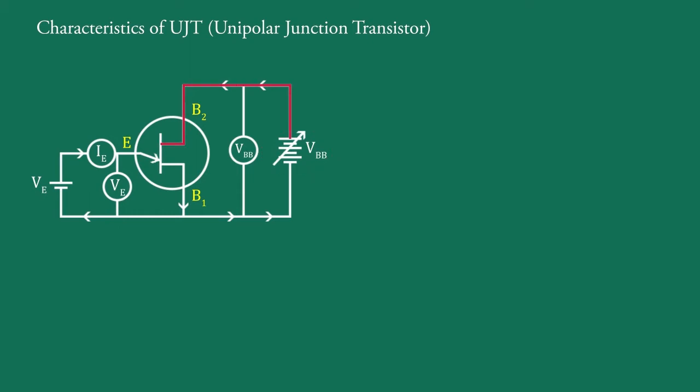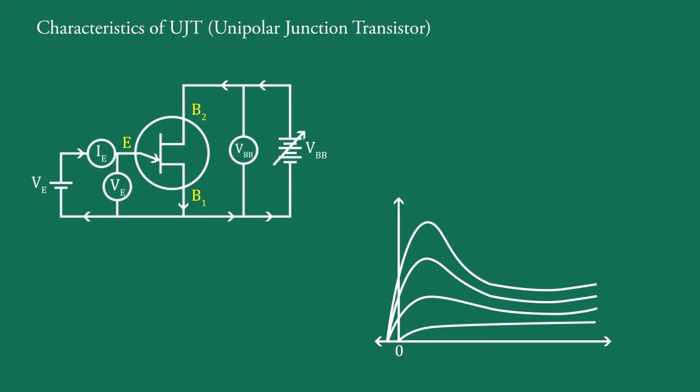The other battery VE is connected between base B1 and emitter in forward bias. This figure shows the curves between emitter voltage VE and emitter current IE of a UJT at different fixed voltages VBB between the base B1 and B2.